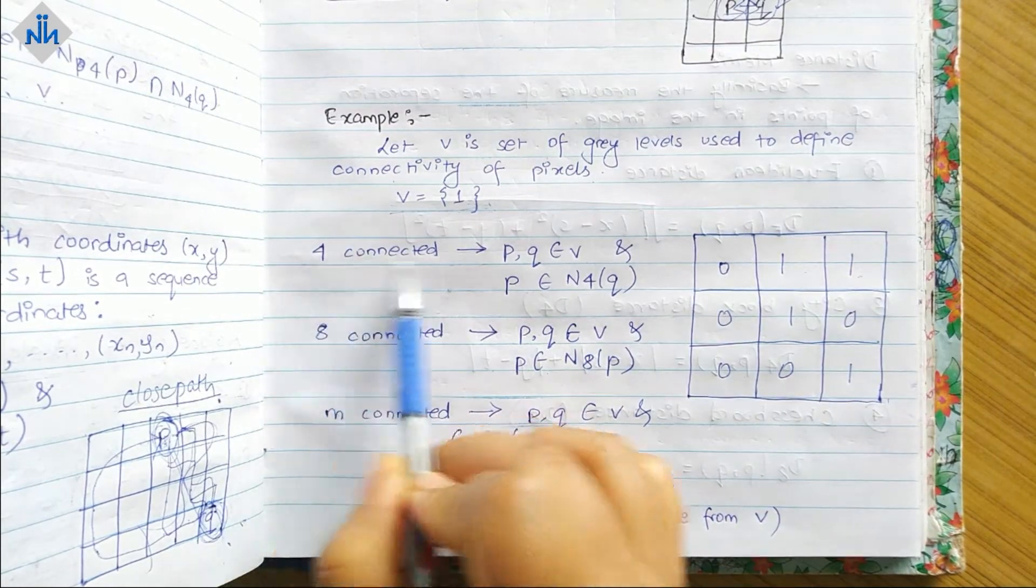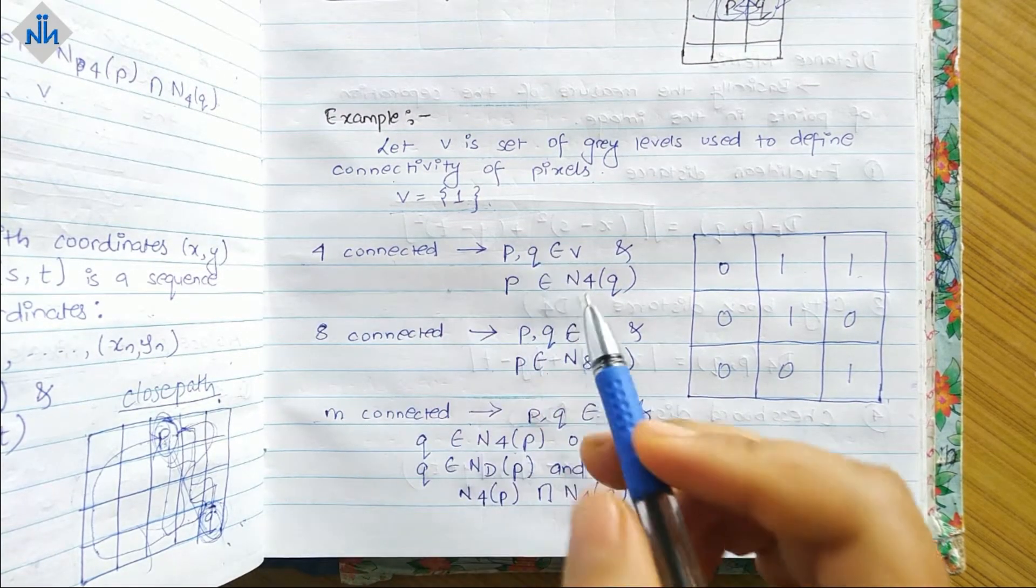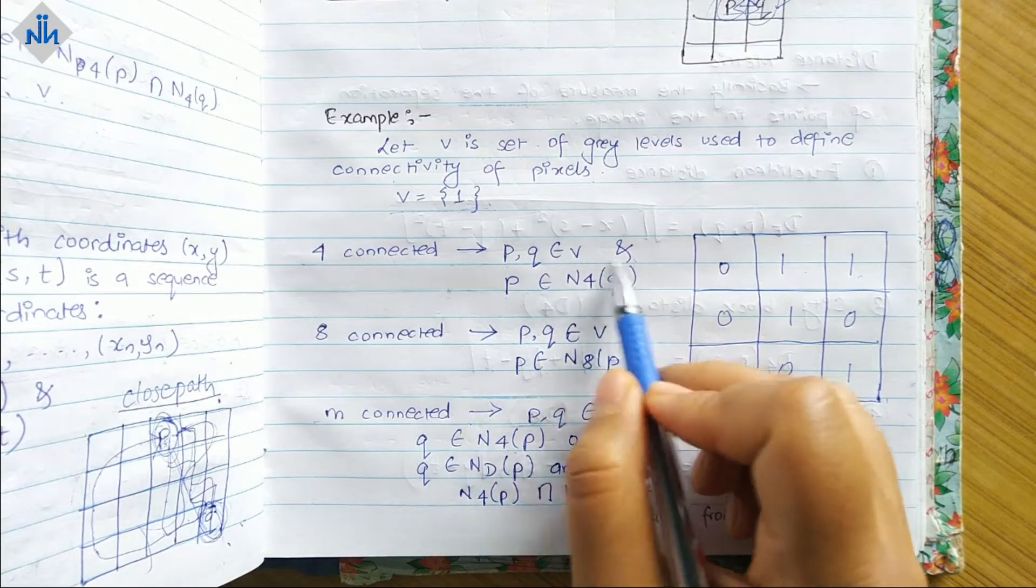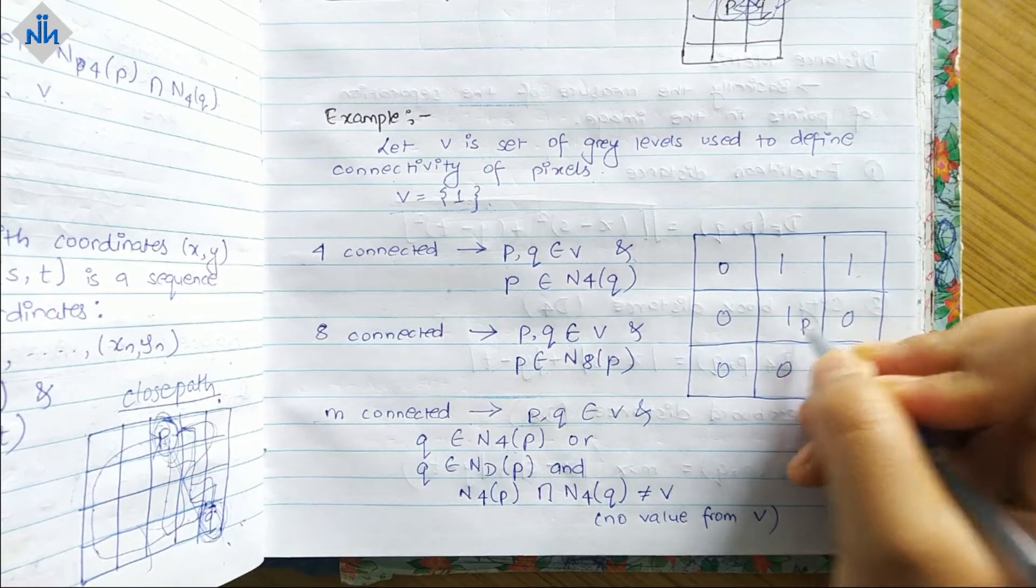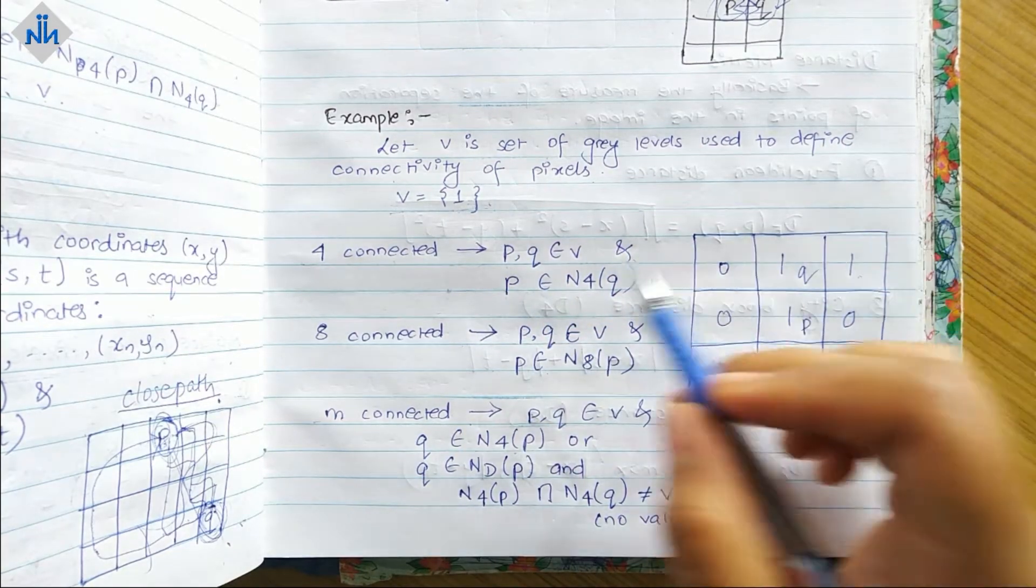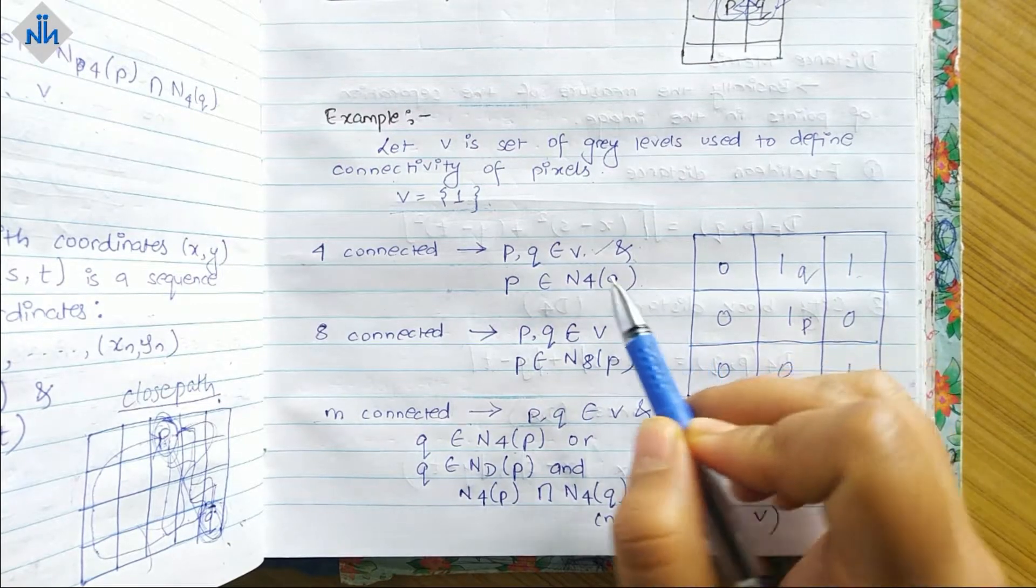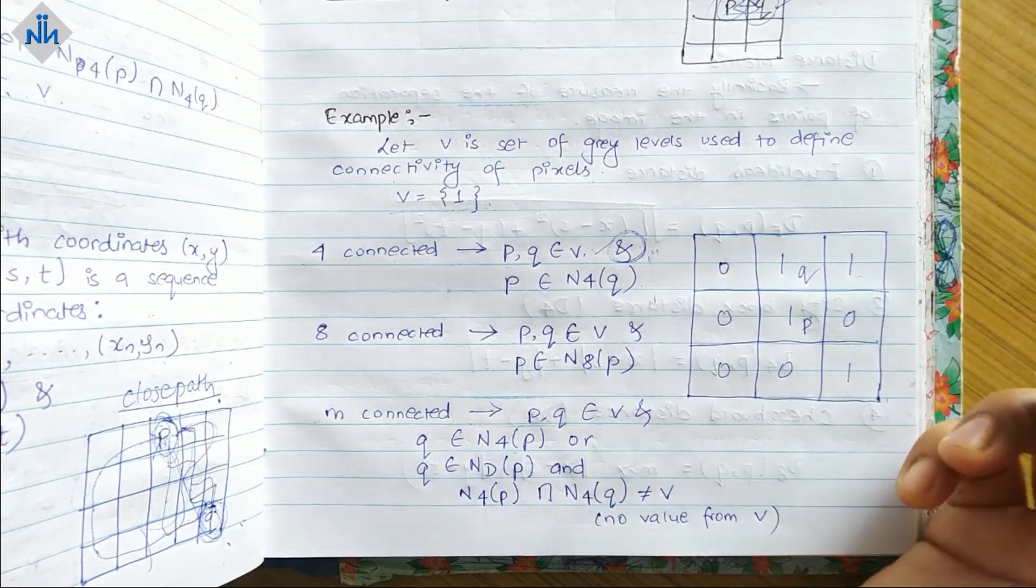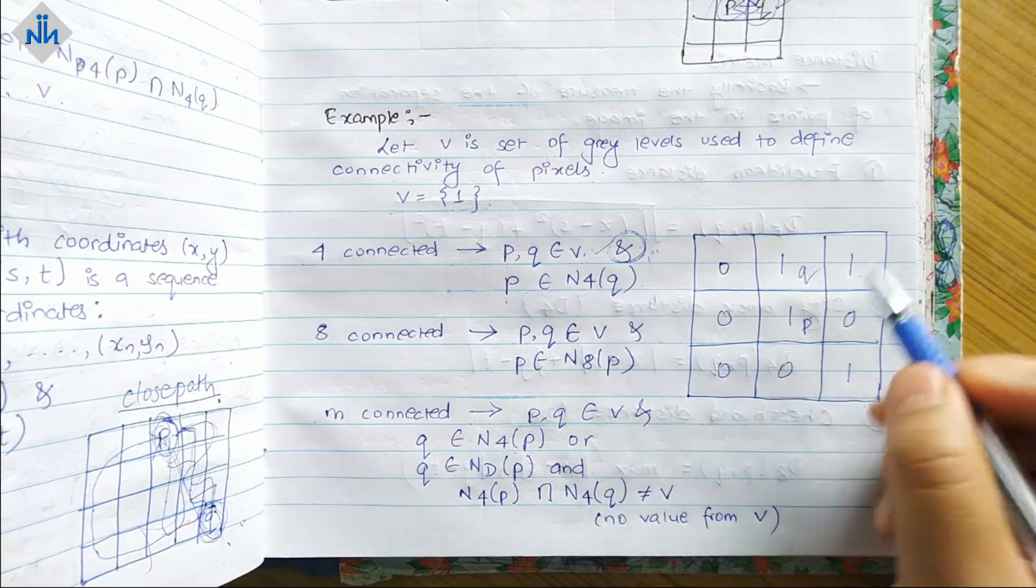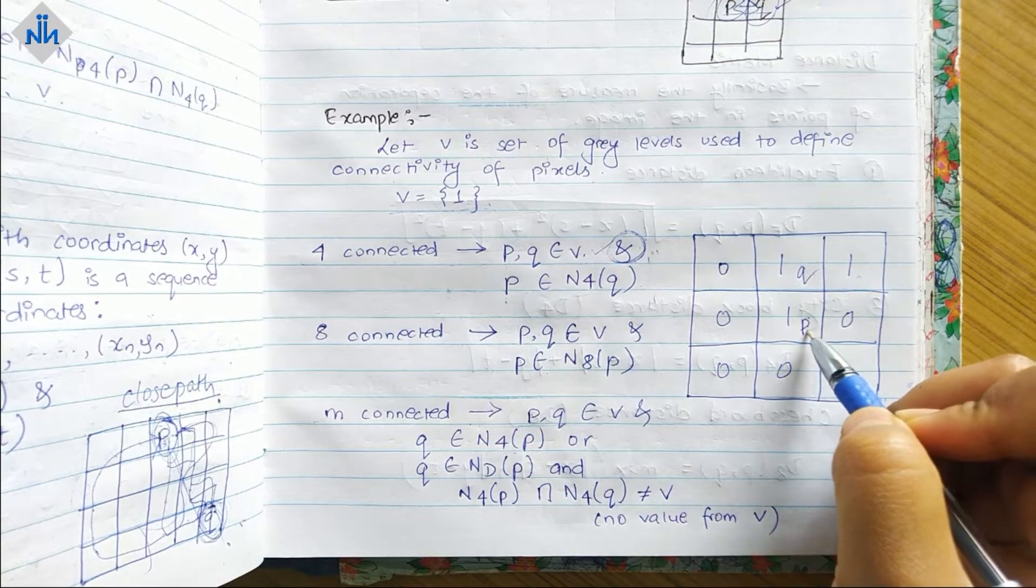First comes four connected, then we have eight connected and M connected. For four connected, first of all P and Q should belong to V, and P should be a N4 neighbor of Q. So if this is P and this is Q, then both the intensity levels are one so the first is ticked. And in the second condition, since we have AND, we have to satisfy both the conditions. So P should be a N4 neighbor of Q. Is P a N4 neighbor of Q? Yes it is, so it is four connected.